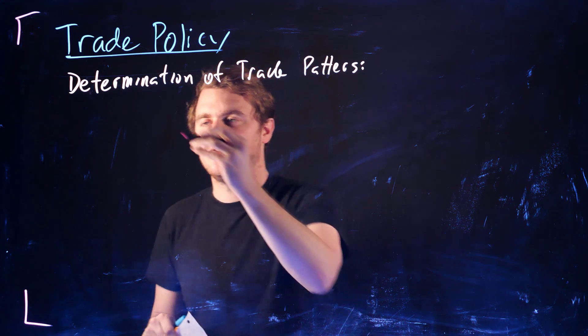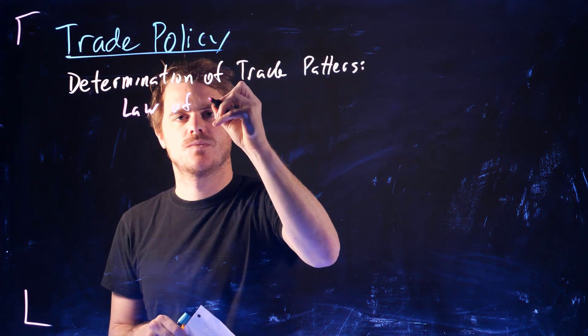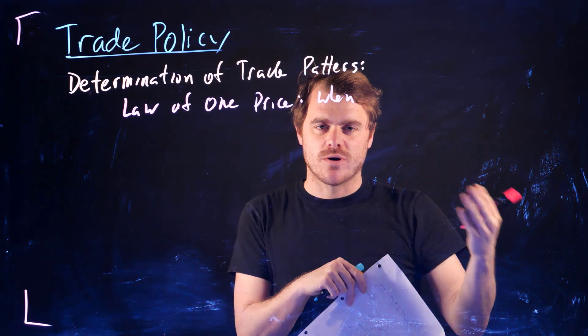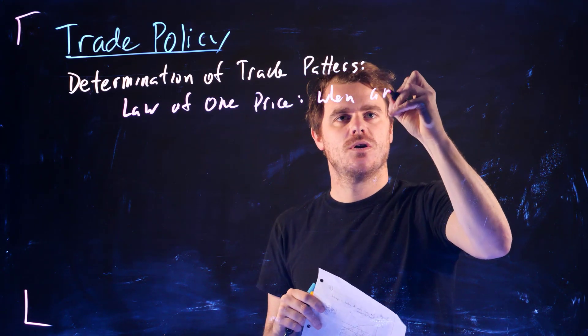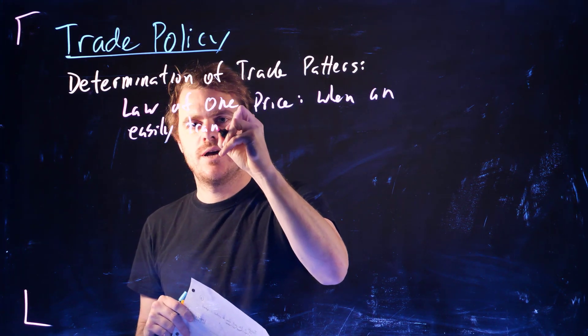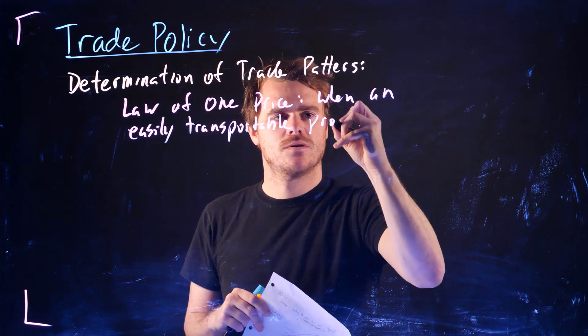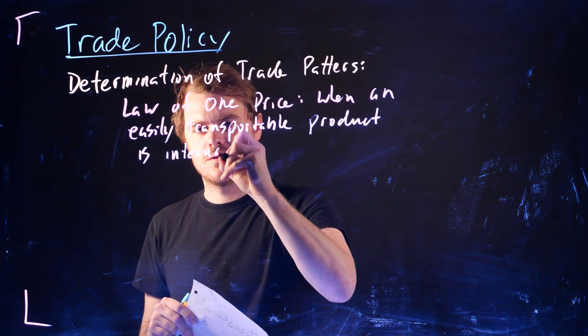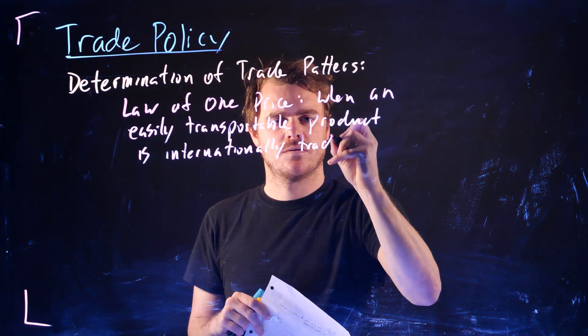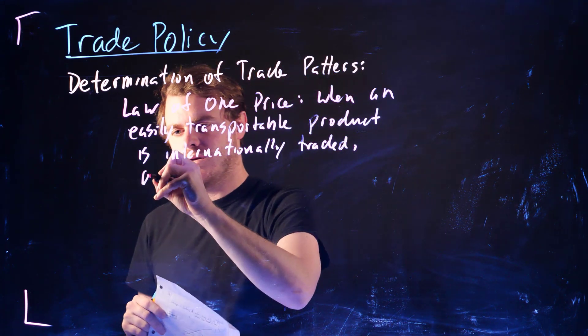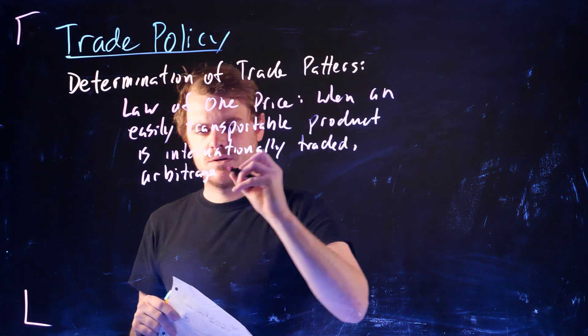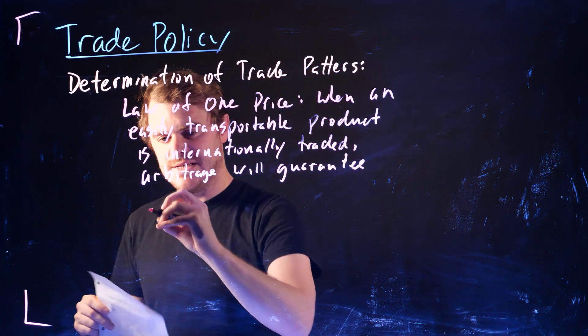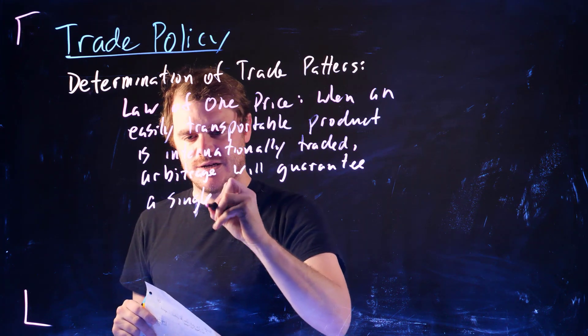So the first thing we should talk about is this idea of the law of one price. And this is the law or theorem that when there is an easily transportable product that is internationally traded, arbitrage will guarantee a single world price.